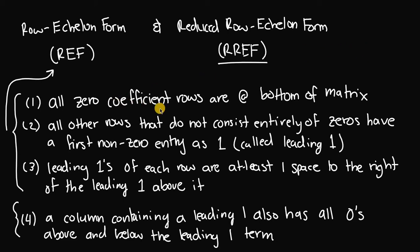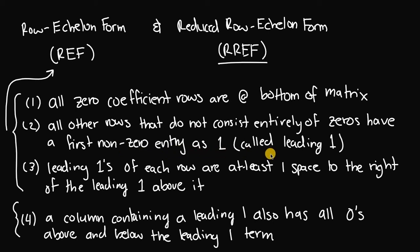The first rule is that all zero coefficient rows are at the bottom of the matrix. If you have a row or rows consisting entirely of zeros, those rows are at the very bottom. The second rule is that all other rows that do not consist entirely of zeros have a first non-zero entry of one, sometimes referred to as the leading one element. So every non-zero row must start with a one as its first non-zero entry.